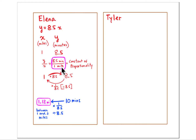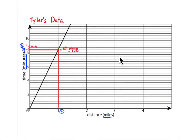If Tyler runs faster, it will take him less time to run a mile, and he'll run farther in 10 minutes. Tyler's information is given on the graph. It goes through zero-zero, confirming it's a proportional relationship. Zooming in, after one mile it takes him eight and one-third minutes.